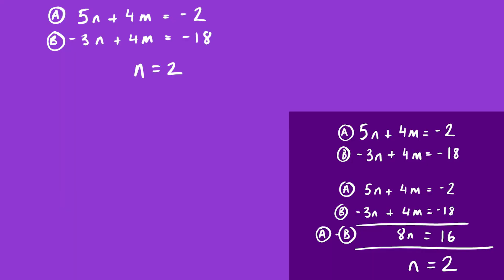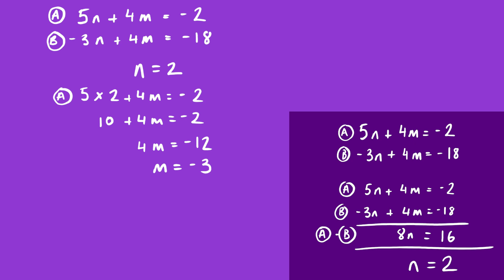Stage two: substitute n = 2 back into equation A. So 5 × 2 + 4m = −2, giving 10 + 4m = −2. Subtracting 10 from both sides: 4m = −12, therefore m = −3. Our two solutions are n = 2 and m = −3.